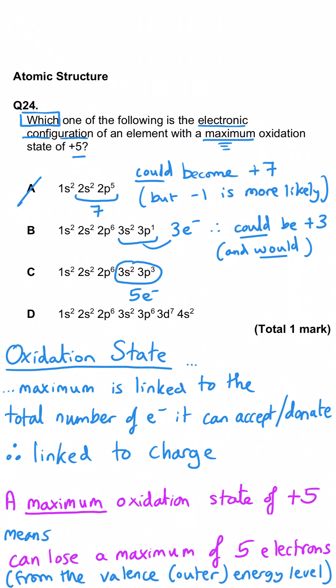B has got 3 electrons in the third energy level so it could only become plus 3. C has got 5 electrons in the third energy level so it could become plus 5 and this is the correct answer. D could in fact become plus 9 because it could lose the 3d7 and 4s2.